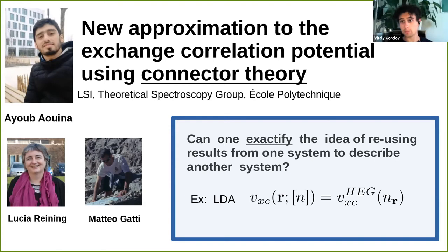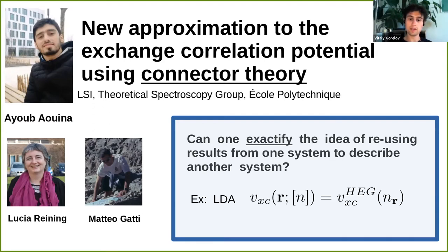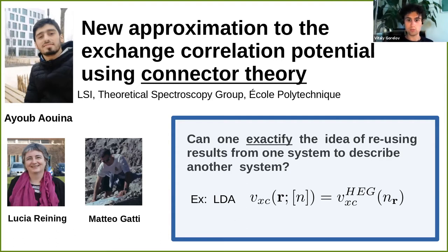Today Ayub will tell us about a new approximation to the exchange-correlation potential using connector theory. In brief, the connector theory is based on the idea to reuse results from one system or a model to describe another system, like a real system. One famous example of such an approach is the LDA functional, which approximates the exchange-correlation potential of a real system by that of a homogeneous electron gas, obtained at the density of the point where the VXC is to be evaluated. Ayub and other members of our group are trying to generalize and formalize this idea of using a model and connecting it to a real system.